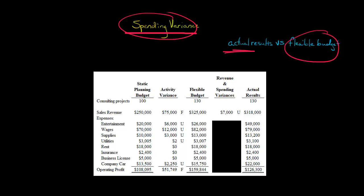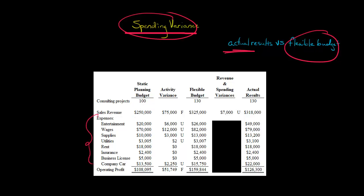Let's take a consulting firm. They put together a planning budget at the beginning of the period where they thought they were going to have 100 consulting projects, with budgeted revenue and budgeted expenses based on those 100 projects. But it turns out the actual number of consulting projects they had was 130.